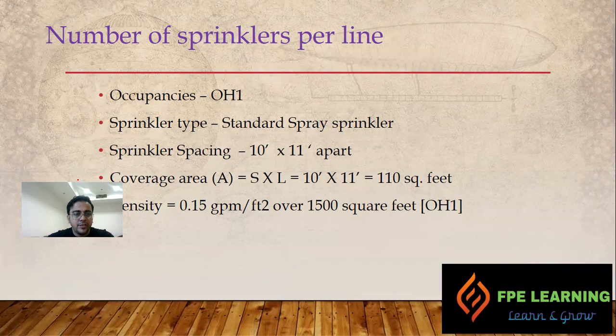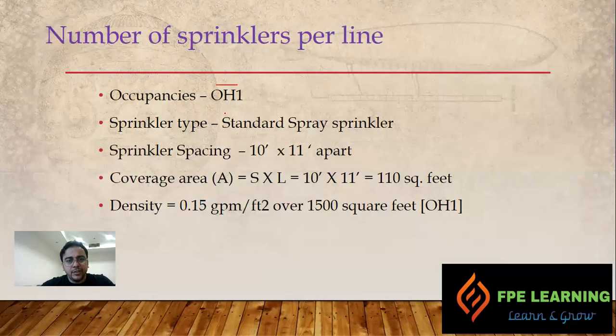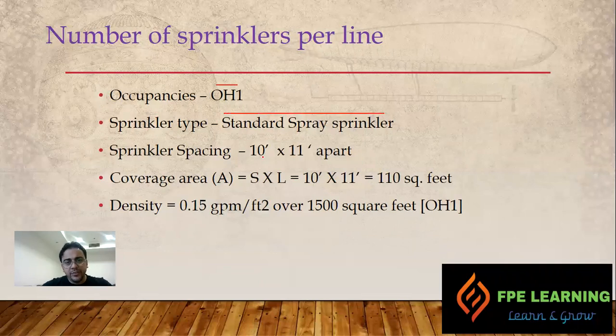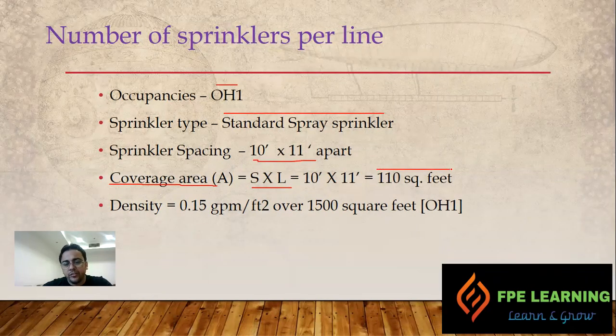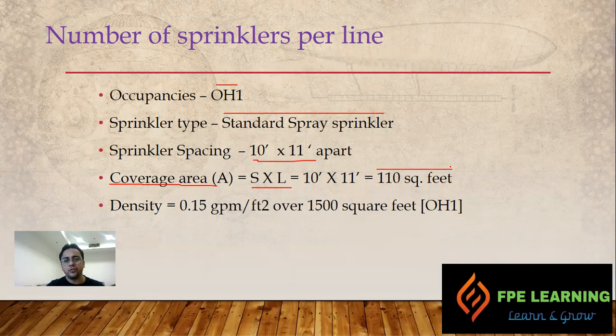Here is our case. Let's say our case is OH-1 for our project and we are using standard spray type sprinklers spaced at 10 feet by 11 feet. The area of sprinkler coverage equals S by L, so S is the distance between sprinklers and L is the distance between lines. One sprinkler can protect 110 square feet. Density for OH-1 is 0.15 GPM per square foot over 1500 square feet of area.